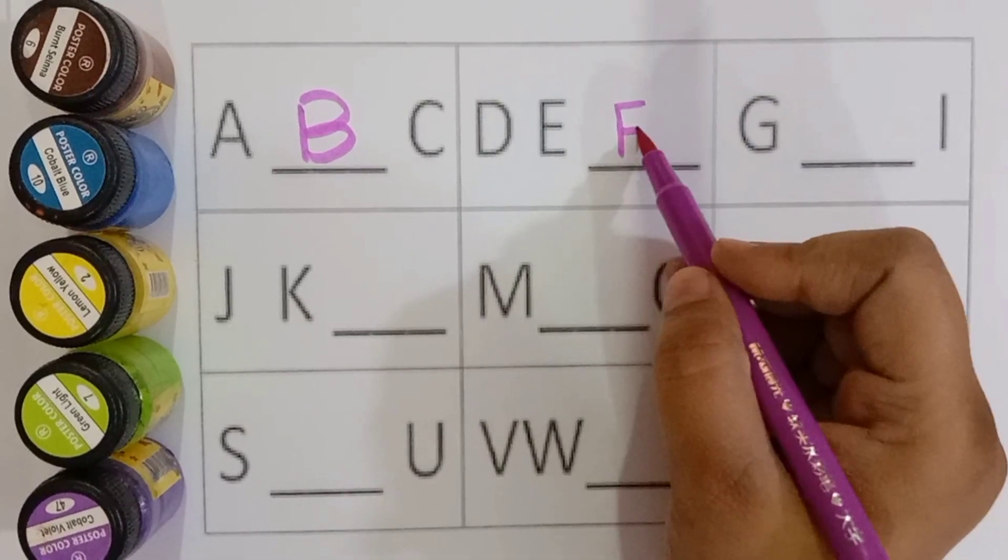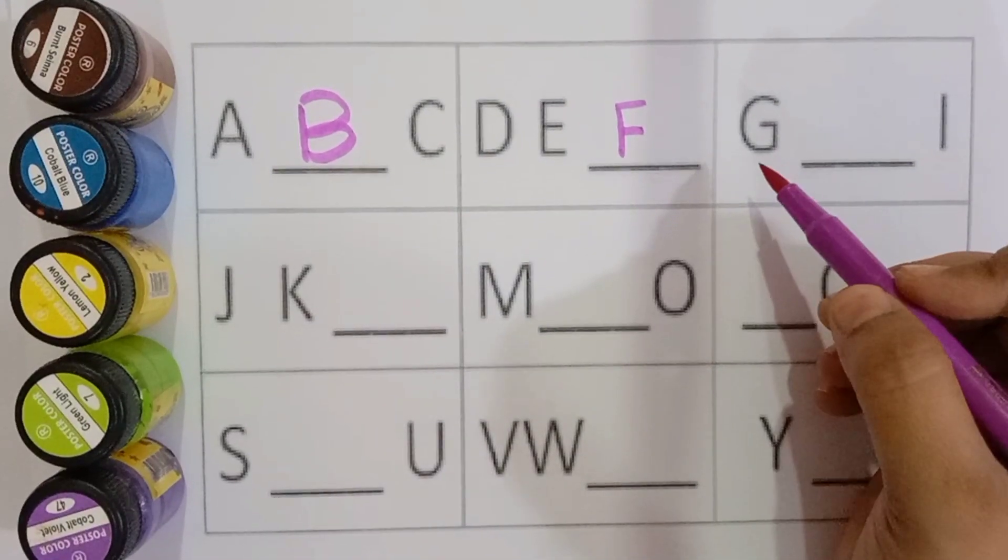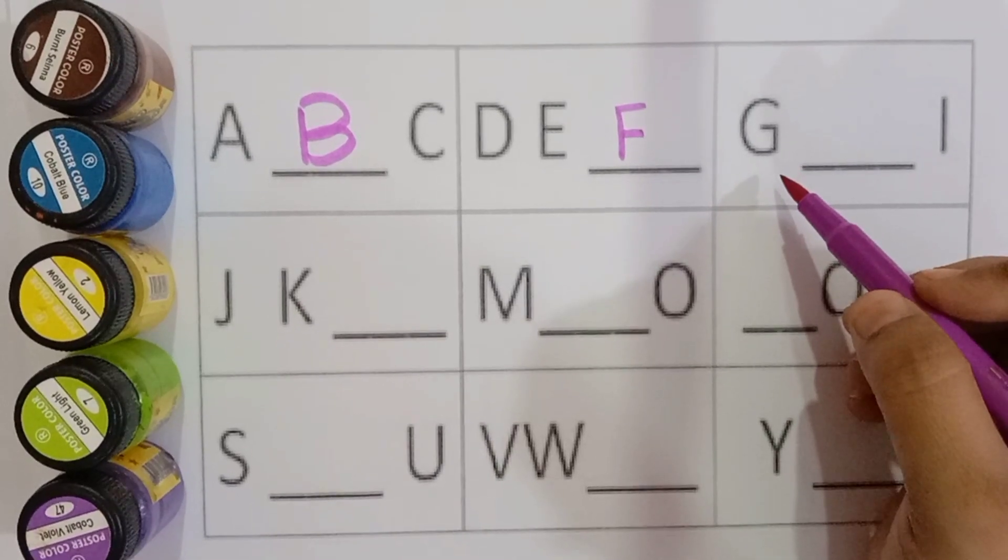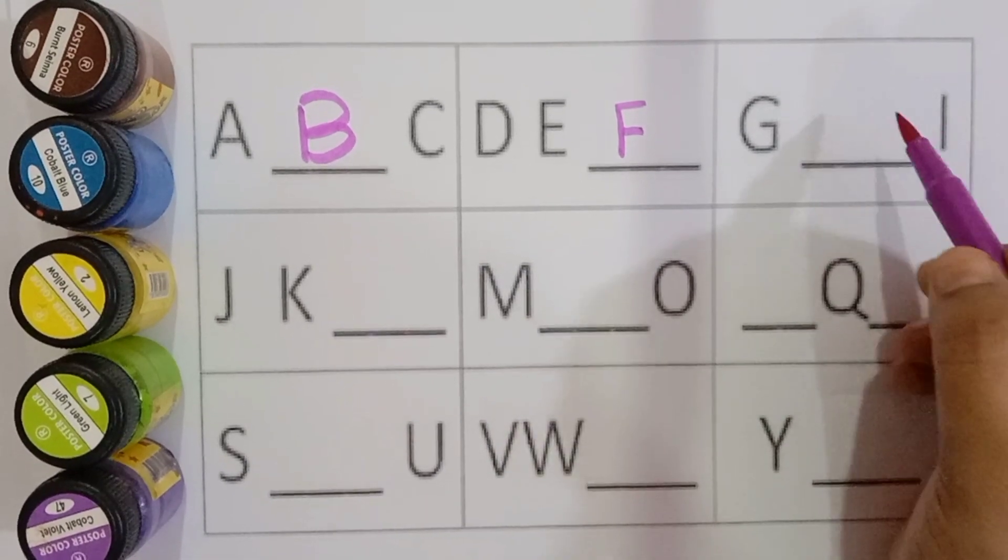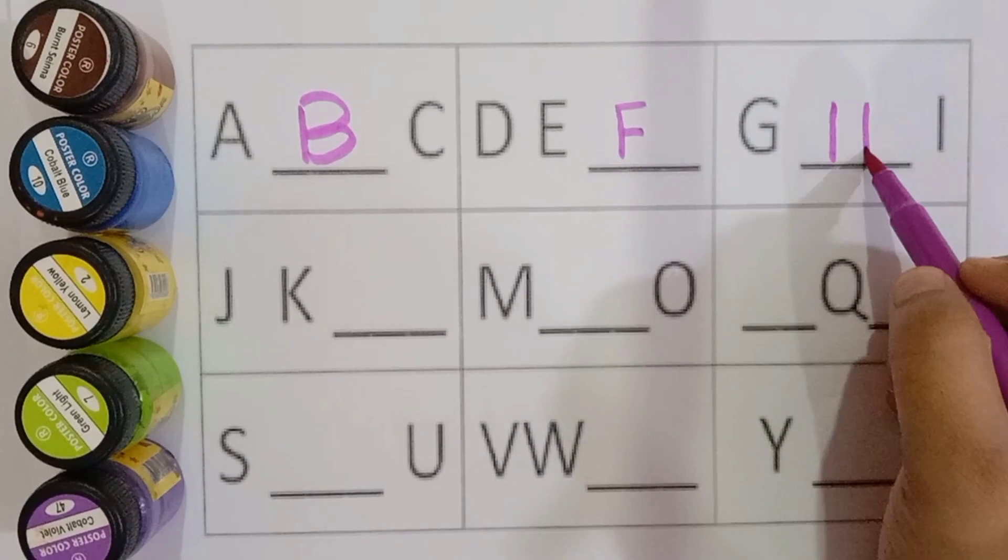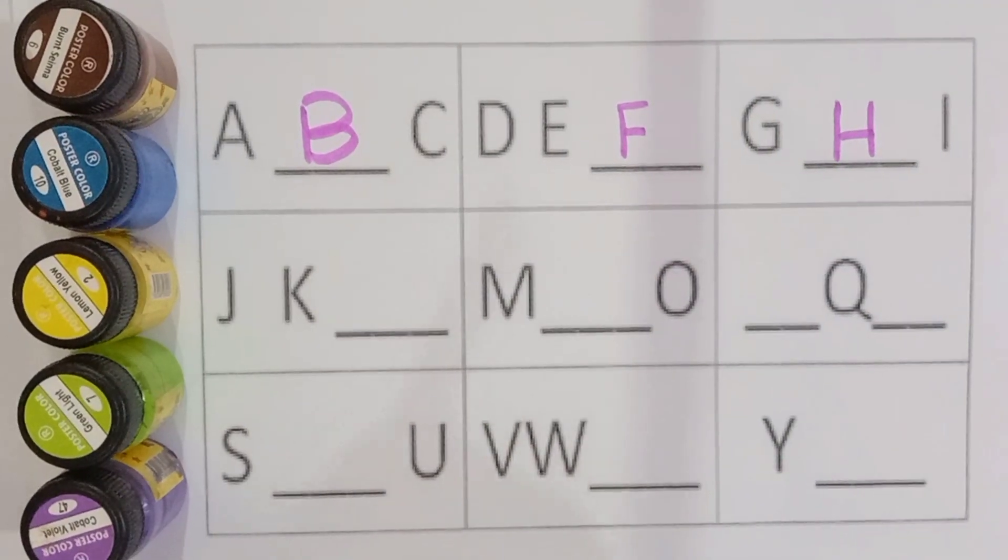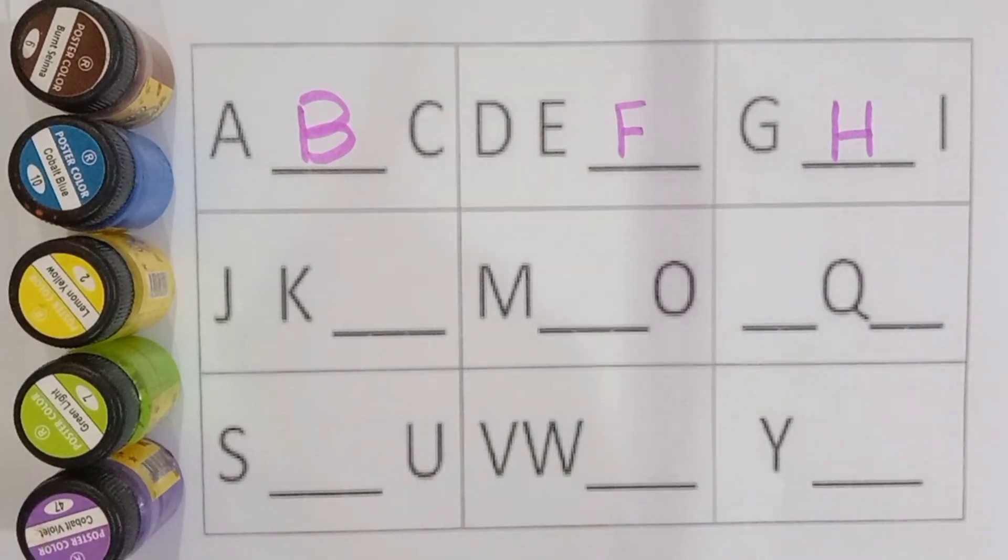F. F for fish, F for fish. G for giraffe, G for giraffe. H. H for horse, H for horse.